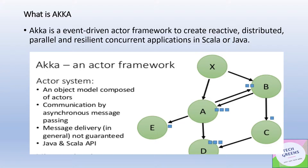Let's try to understand this definition with the help of this picture. The different nodes or green circles in this picture represent different actors in the Akka framework. An actor is the primary or basic unit of execution meant to process any kind of work in the Akka system. Akka is composed of object models in the form of actors, and actors are independent execution units — they do not share any data entities or variables. The only mode of communication between different actors is message passing in an asynchronous way.